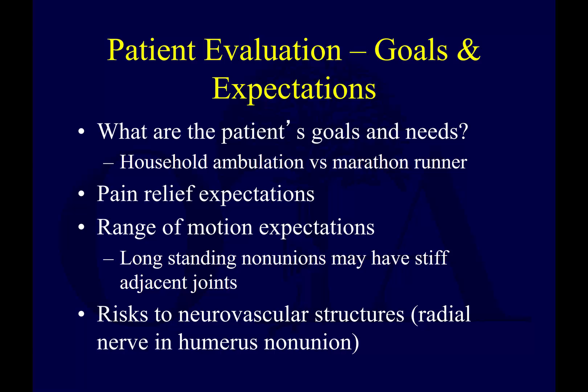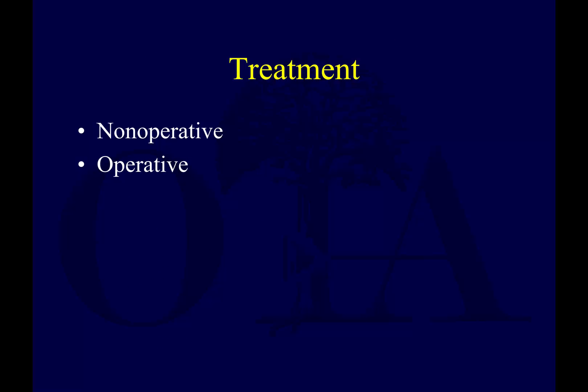You want to establish the patient's goals and expectations. Are they a household ambulator or very athletic? What are their pain relief expectations? Consider range of motion — these patients can be very stiff. Make sure you understand the neurovascular situation, as the patient may have had prior neurovascular injury, or the treatment itself may potentially cause that.